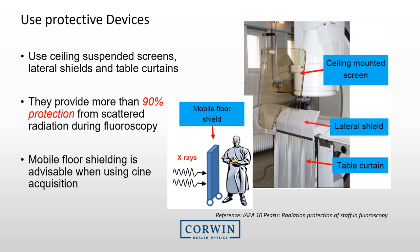There are usually additional lead protective devices within the room. A ceiling-mounted lead protective screen can be dropped down to reduce exposure to your face. Additionally, table curtains and a lateral shield can be positioned around the table. Once all of these are in place, the radiation exposure to the operator is reduced significantly. A mobile floor shield may also be provided for those near the patient, offering further significant radiation reduction during fluoroscopy.